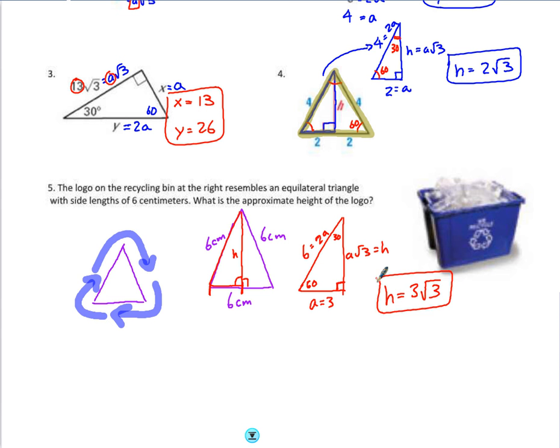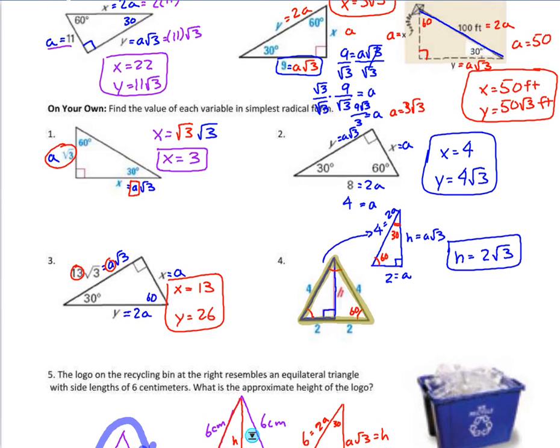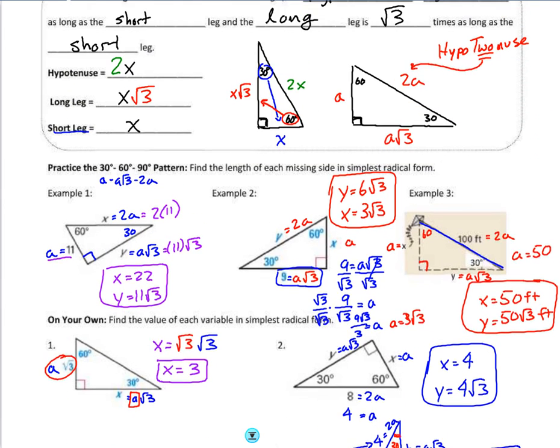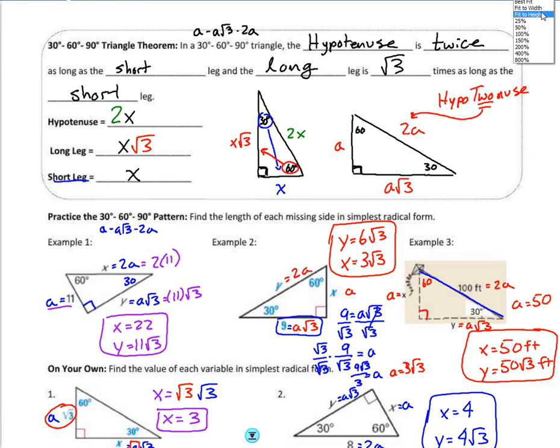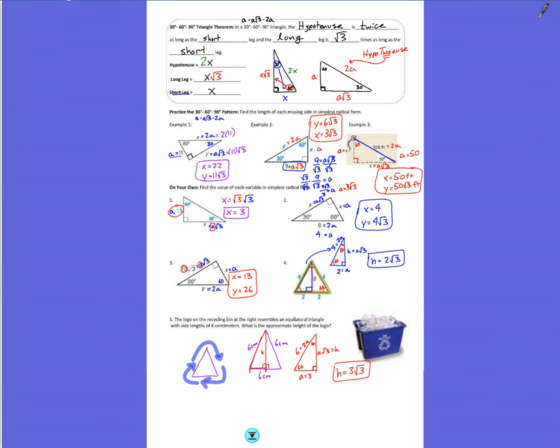So hopefully this gives you a quick snapshot of our lesson here on 30, 60, 90 right triangles. Follow these two patterns for 45, 45, 90 as well as 30, 60, 90 to help you solve sides of a right triangle, special right triangles.